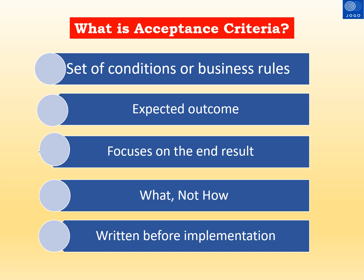Let us see what is acceptance criteria. As we are aware, in agile projects requirements are captured in the form of epics, features, and user stories. Each user story will have the acceptance criteria. Acceptance criteria is a set of conditions or business rules which should be satisfied in the functionality of the product in order to be accepted by the product owner.